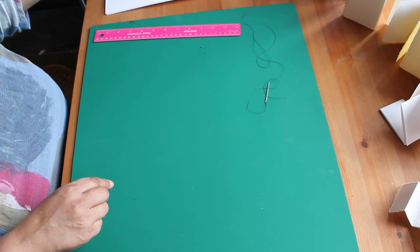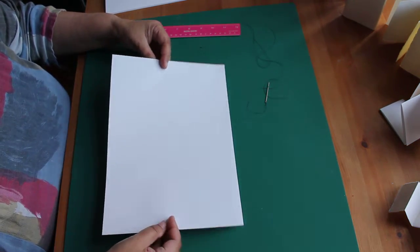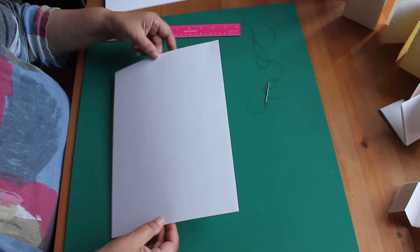You'll also need some A4 paper. I'm using cartridge paper. You could use A4 copying paper but cartridge paper will hold the form of your structures much better.